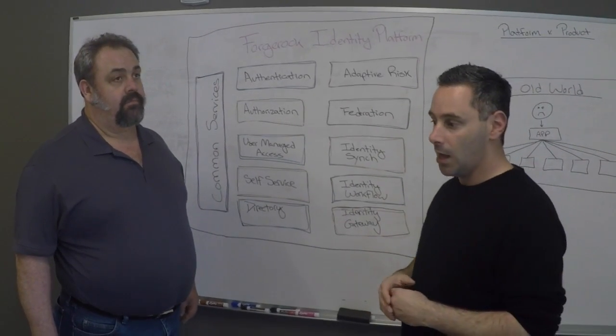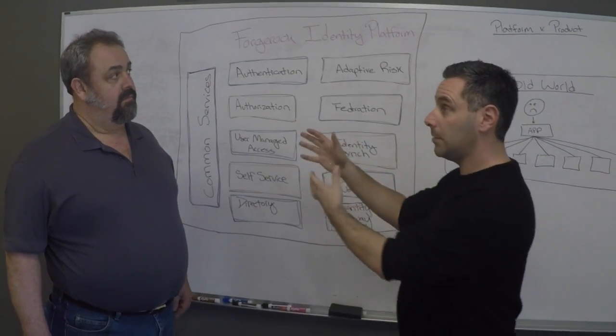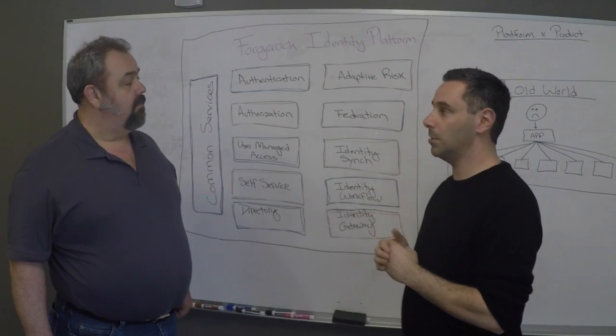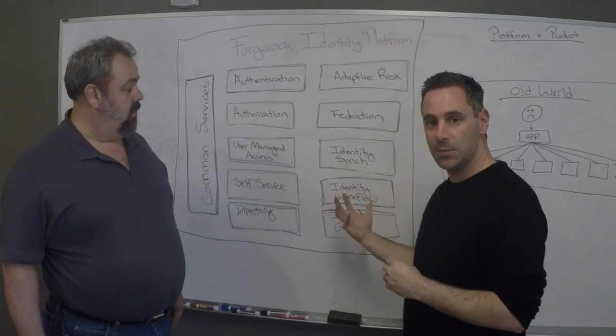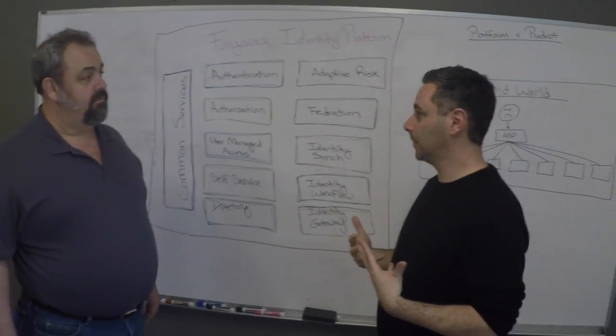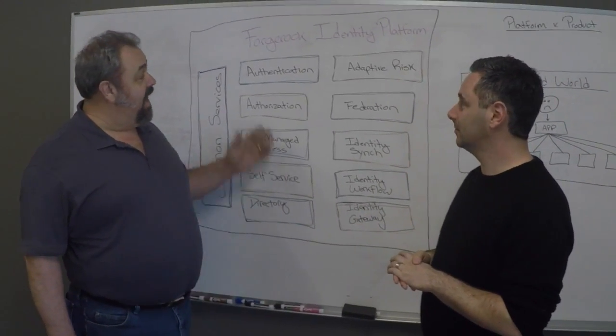You can write audit handlers to send that data to different places. There's a common UI framework that we use to have commonalities in the platform. All of this gets you economies of scale and prevents you from having to integrate all this stuff together—an intelligent way of building identity.